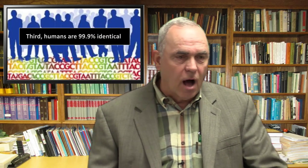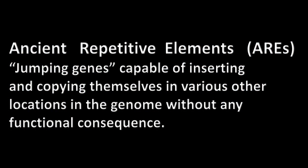What separates all the various races of mankind is a 1% difference in our genetic makeup — not very much. Also referred to as ancient repetitive elements, or AREs — these 'jumping genes' are capable of inserting and copying themselves in various other locations in the genome without any functional consequence. About 45% of the junk DNA is made up of these ancient repetitive elements. Note the word 'ancient' is already prejudicially assuming evolution.